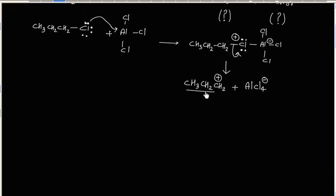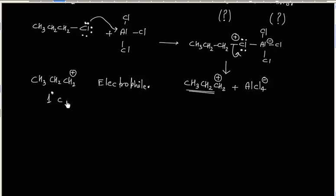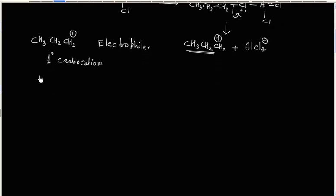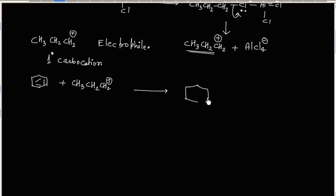This carbocation will act as an electrophile. This is a 1° carbocation. If this carbocation reacts with the benzene ring, we will have electrophilic aromatic substitution, and the product is this one.